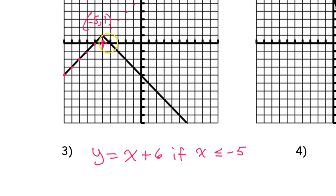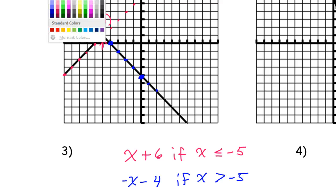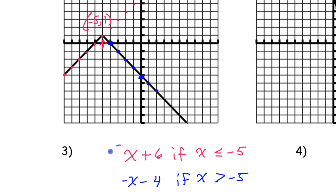Now let's do the other side. This side is going down 1, right 1. So that's going to be y equals negative x. The y-intercept is right here — negative 1, 2, 3, 4 — so we put minus 4. And we switch this to greater than negative 5. Using proper piecewise notation, drawing a brace and calling it f of x.